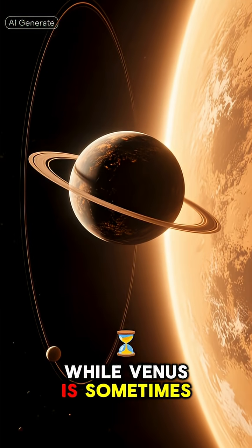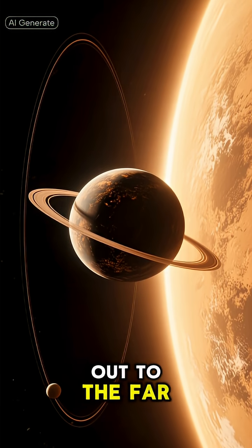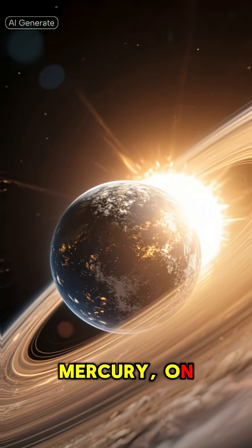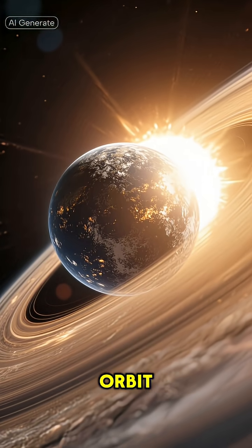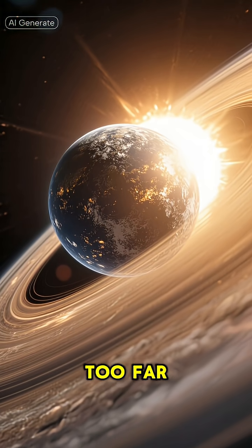While Venus is sometimes super close, it also swings way out to the far side of the Sun. Mercury, on the other hand, zips around the Sun on a much tighter orbit, so it never strays too far from us.